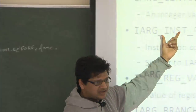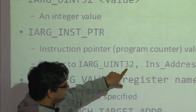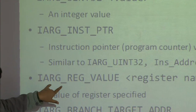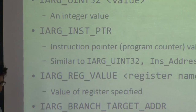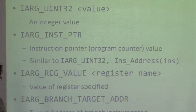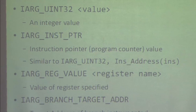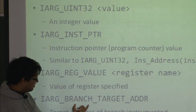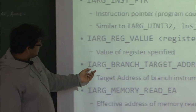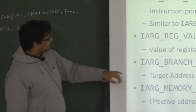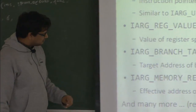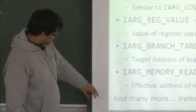You can also pass register values using IARG_REG_VALUE followed by the register name — PIN will pass the current value of that register. You can pass the branch target address with a corresponding macro, which gets the branch target address from the instruction and passes it as a value. You can also pass memory addresses, and there are many more argument types available.